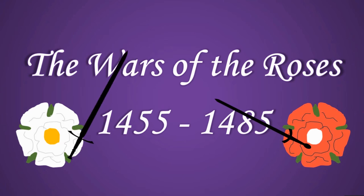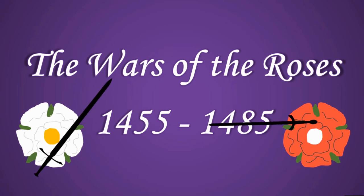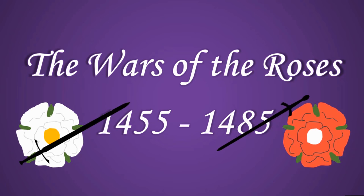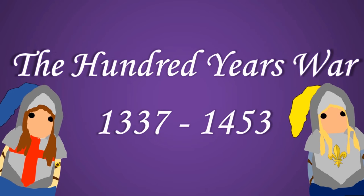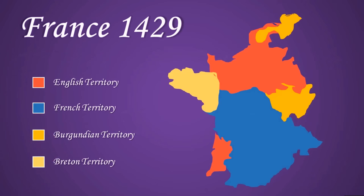To understand the Battle of Bosworth, we have to understand the Wars of the Roses, which was the huge conflict that essentially ended in 1485. And to understand this, we have to first look at the Hundred Years' War, fought between England and France. If we go back to 1429, much of modern-day France was controlled by the English, mostly thanks to the conquests of Henry V. However, going forward almost 30 years to 1453, all the English territory in France had been lost, and this created a big issue.